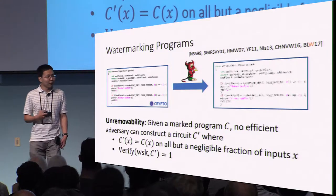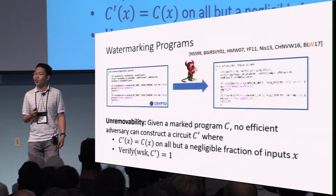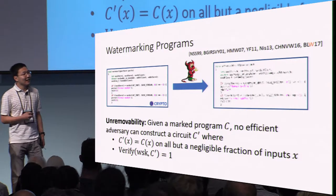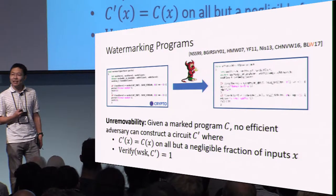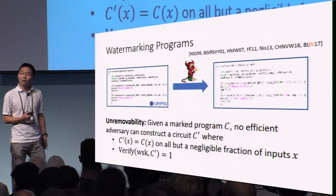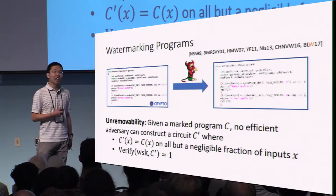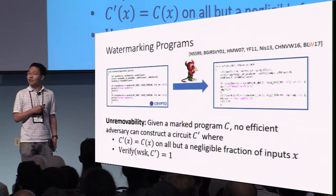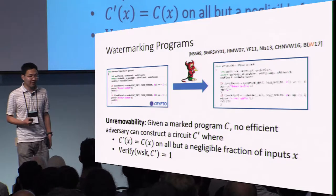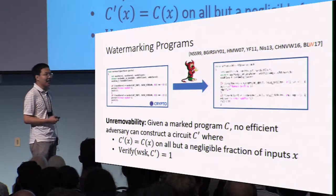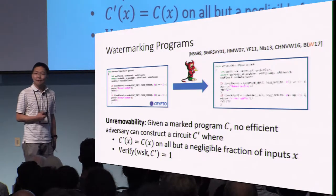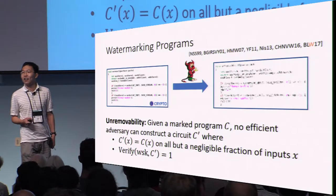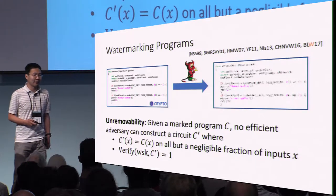The second property is the more interesting one: the security requirement of unremovability, which basically says that if an adversary is given access to a watermarked program, that adversary should not be able to remove the watermark without destroying the functionality of the program. Namely, the adversary cannot produce a new circuit C prime that implements the same function and yet is considered to be unwatermarked from the perspective of the watermarking algorithm.